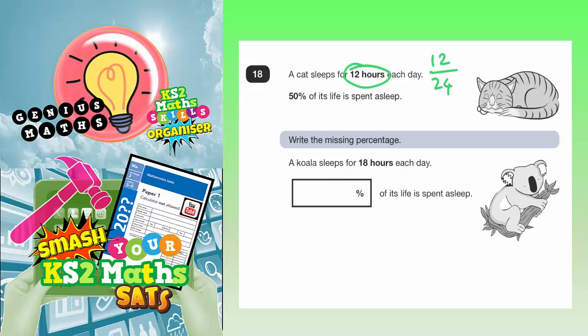And that is because that 12 hours is out of 24 hours in a day. And 12 out of 24, 12 is a half of 24, so 12 out of 24 is the same as a half. And as we know, 50% is a half. So we've got that 50% from the fraction that 12 out of 24 is also a half.